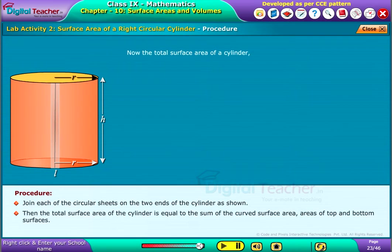Then, the total surface area of the cylinder is equal to the sum of the curved surface area, areas of top and bottom surfaces.